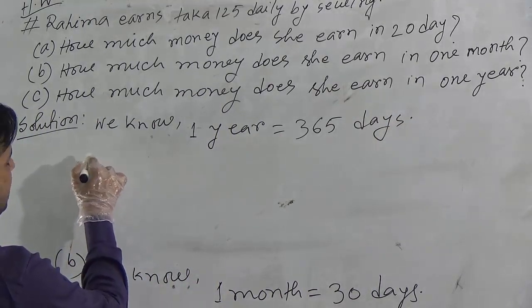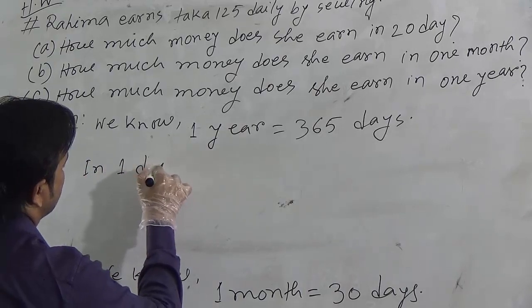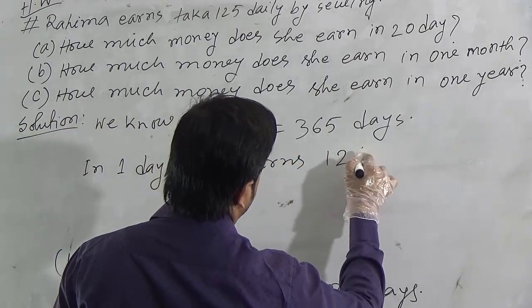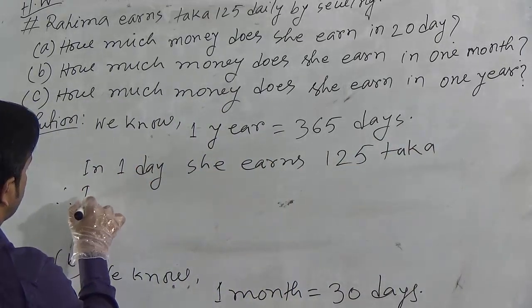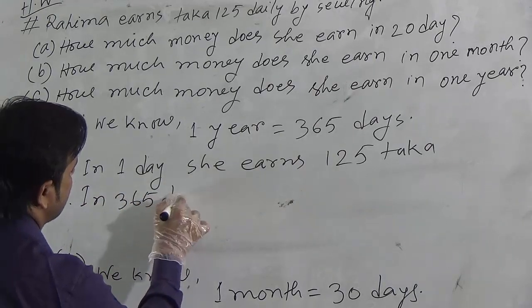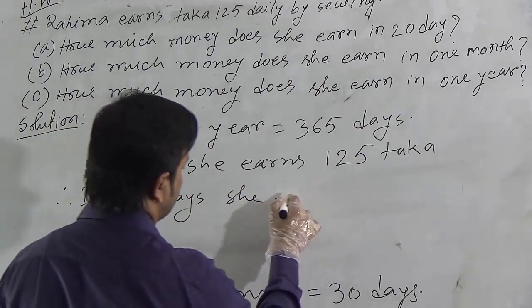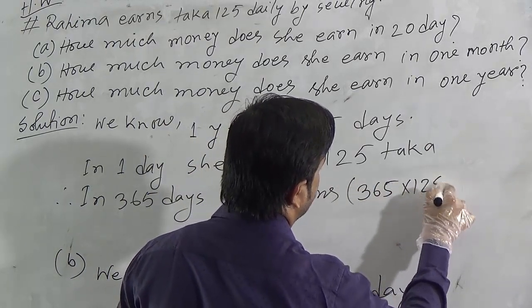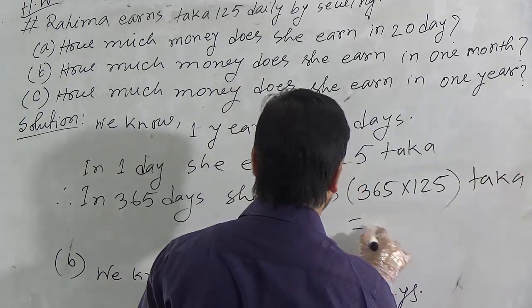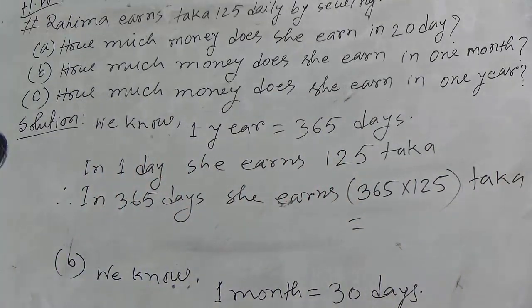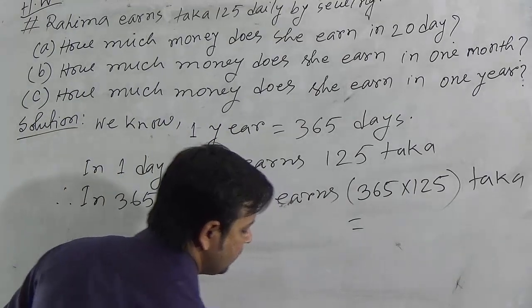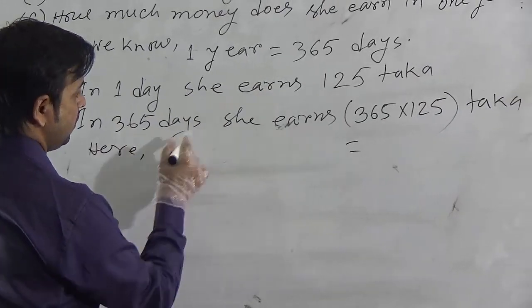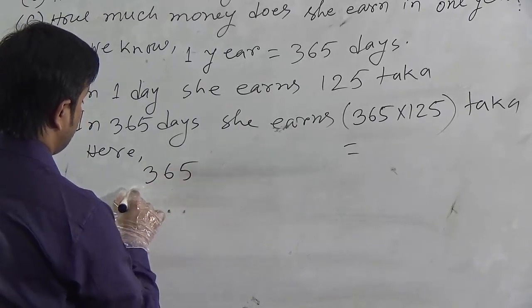So, we can write in 1 day she earns 125 Taka. Therefore, in 365 days, she earns we have to multiply 365 by 125 Taka. Now, I will show this multiplication. Let us see the multiplication here. 365 we have to multiply by 125.